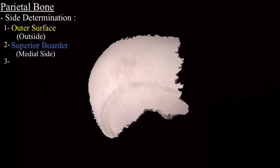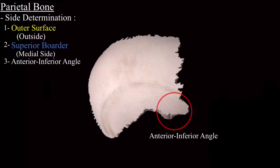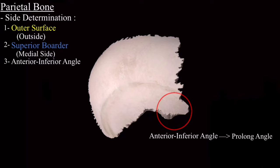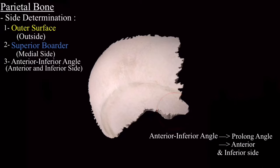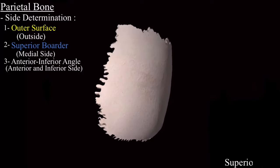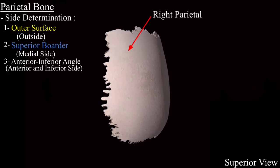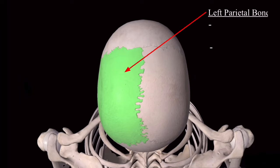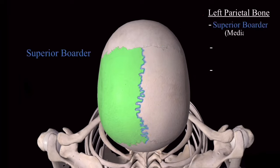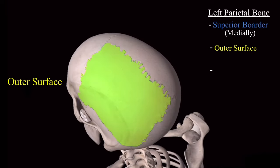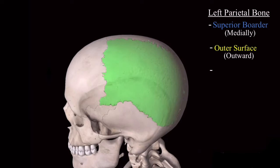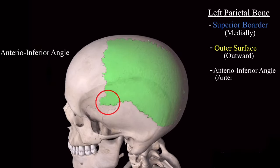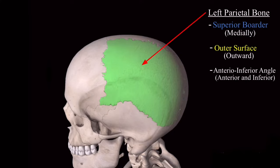Third point is related to the angle. This is the anterior inferior angle. Compared with the other angles it is a prolonged angle — in simple words, this angle seems like it is stretched out. So the anterior inferior angle is prolonged and it should be on the anterior and inferior side. Looking from the superior view, it is clear that this is the right parietal bone. For the left parietal bone, the superior border is on the medial side, the outer convex surface is outward, and the prolonged anterior inferior angle is on the anterior and inferior side.